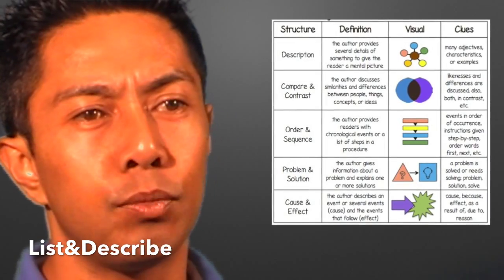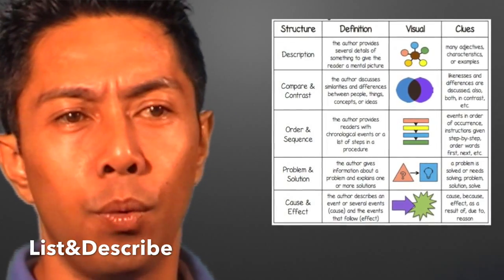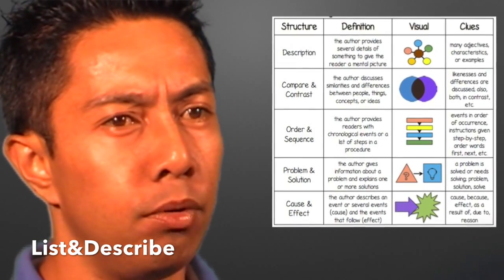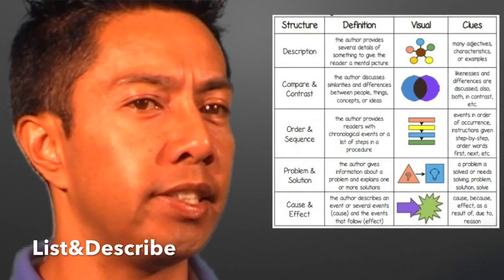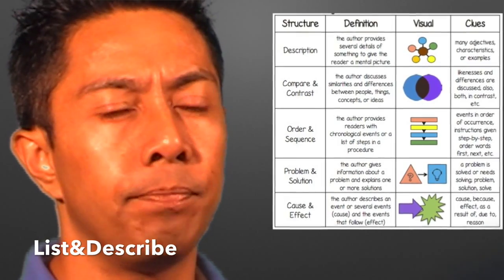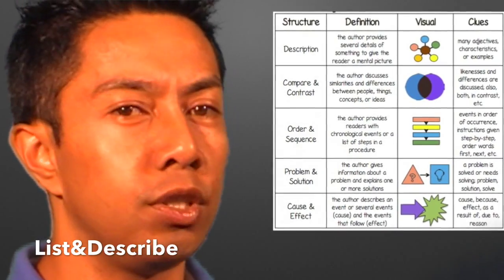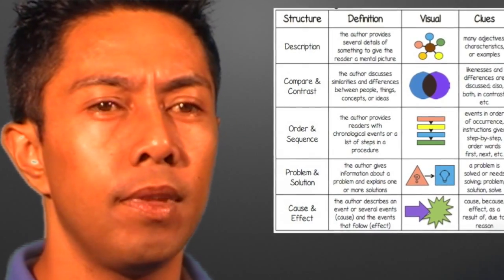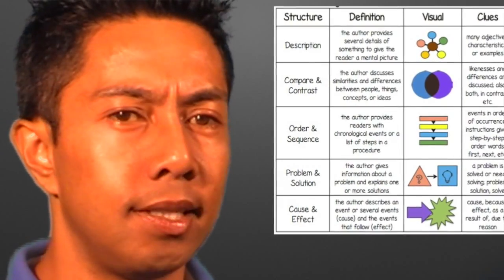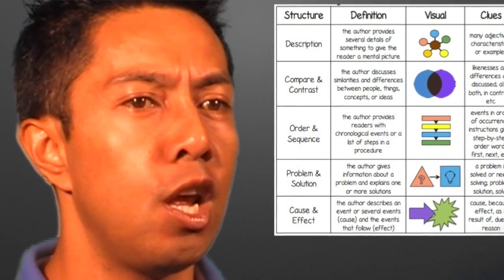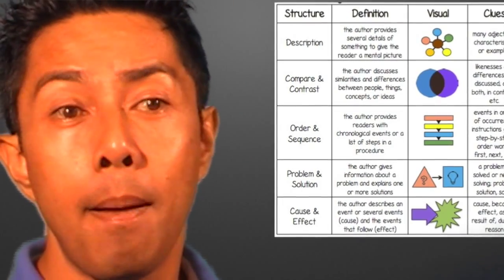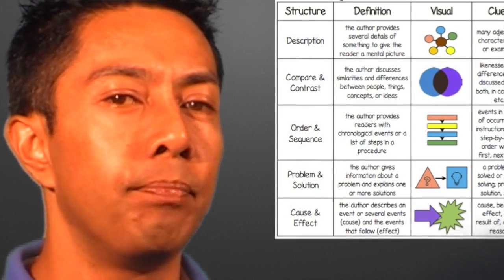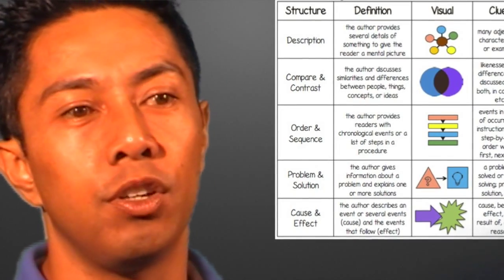List and describe is where an author will list and/or describe the features of something. For example, they might be describing a reef ecosystem or the features of a planet. They'll use adjectives to describe, or use a comma-separated list to describe the features. Traditionally, we'd summarise this text structure as a bulleted list with headings and subheadings, but an alternative way shown in the icon is using a web. It's a matter of preference which one you use.